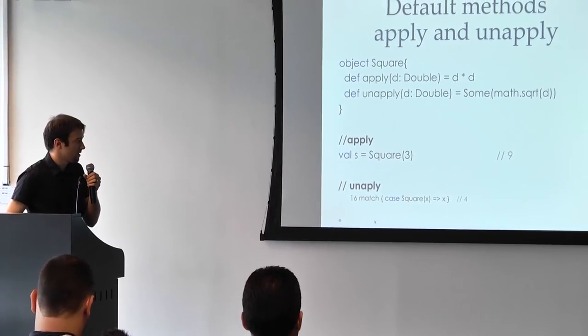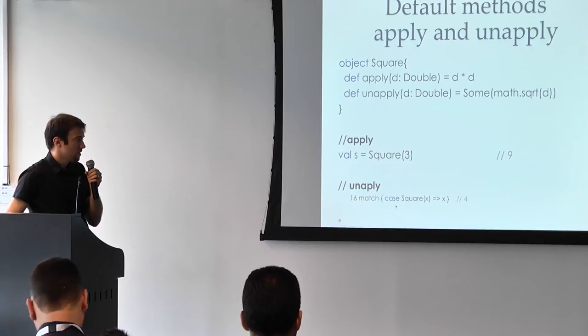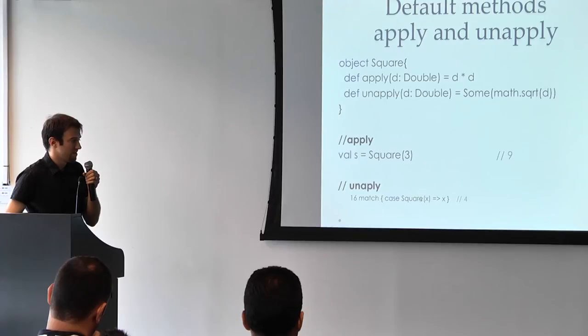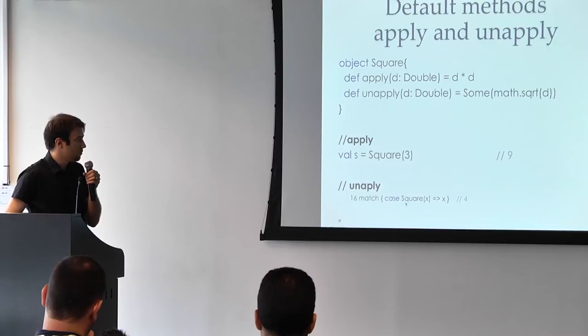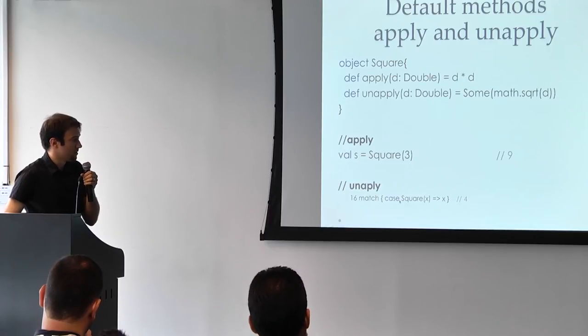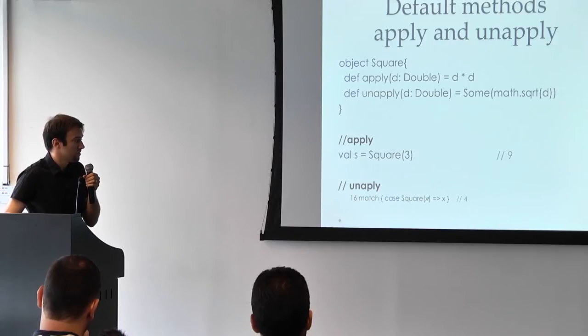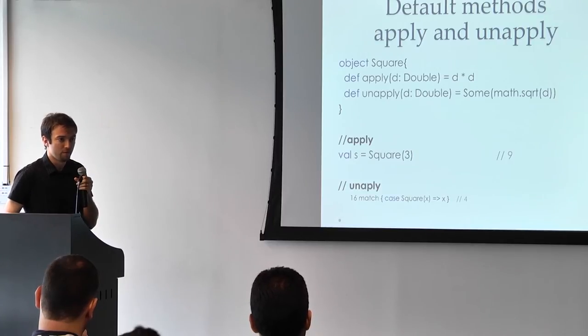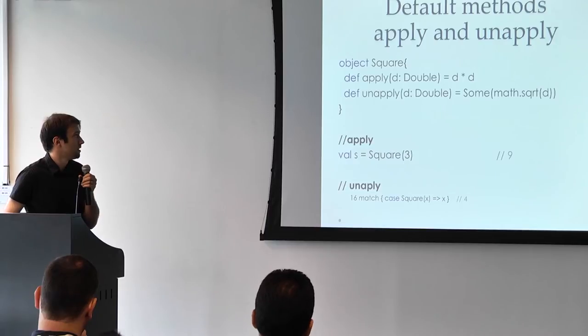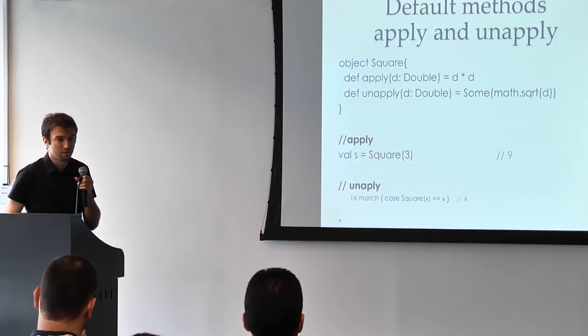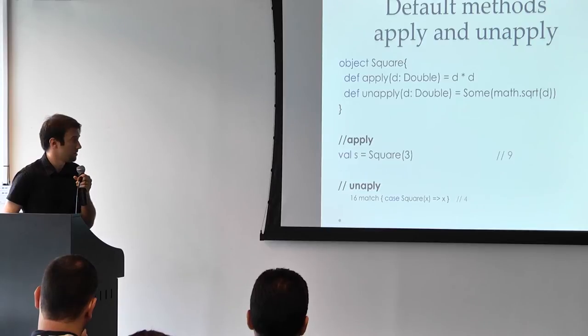For example, we can say, if we have the number 16, and we applied square on some number, what would that number be? Basically, what the compiler would translate it to is to call the unapply function on the number, and the result is going to be 4. We are going to see much more powerful examples of when pattern matching makes a huge difference between readable and maintainable code and one that is not.